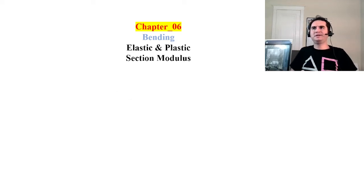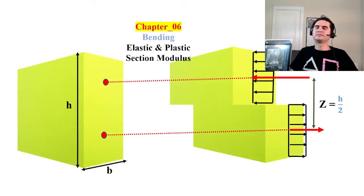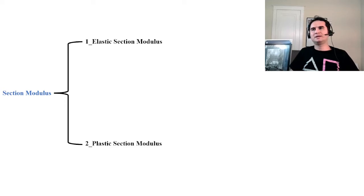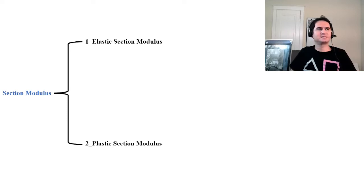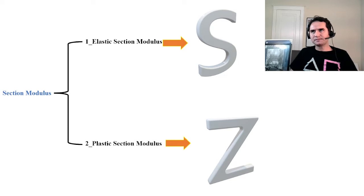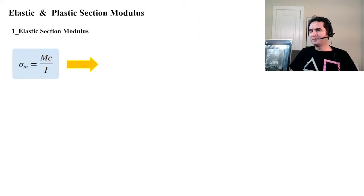Chapter 6: Bending, Plastic and Plastic Section Modulus. In general, section moduli are divided into two categories: the first one is elastic section modulus and the second one is plastic section modulus. We denote the elastic one with capital S and plastic section modulus with capital Z. Let's talk about them in more detail.